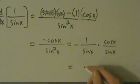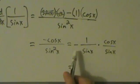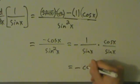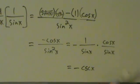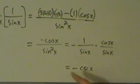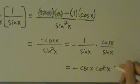And that's going to be, so negative 1 over sine of x, that's negative cosecant of x. And then cosine over sine, that's cotangent, right? So this is negative cosecant of x, cotangent of x.